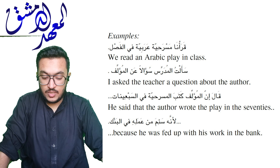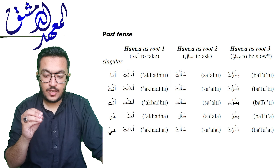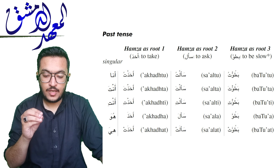Here are three verbs with Hamza as a root letter: أَخَذَ، سَأَلَ، بَطُؤَ. Past tense conjugation — singular: أَنَا أَخَذْتُ، أَنْتَ أَخَذْتَ، أَنْتِ أَخَذْتِ، هُوَ أَخَذَ، هِيَ أَخَذَت — then similarly for سَأَلَ and بَطُؤَ. Plural: نَحْنُ أَخَذْنَا، أَنْتُمْ أَخَذْتُمْ، أَنْتُنَّ أَخَذْتُنَّ، هُمْ أَخَذُوا، هُنَّ أَخَذْنَ — and likewise for سَأَلَ and بَطُؤَ.